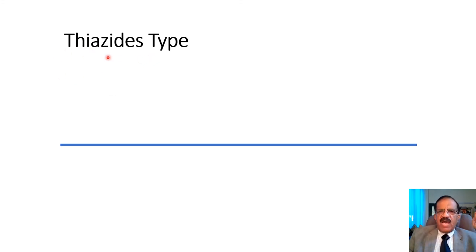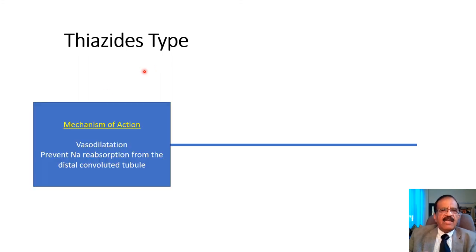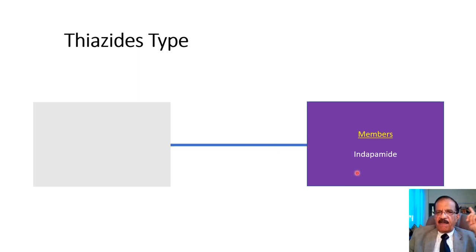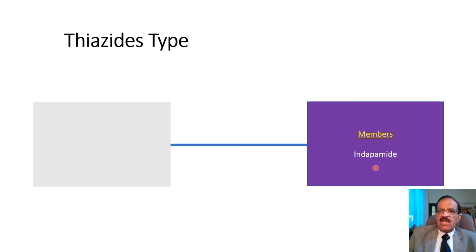Then we have drugs belonging to the same family but slightly different — that is why we call them thiazide-type diuretics. They are called diuretics but their diuretic effect is actually minimal; their predominant action is through vasodilation. Vasodilation helps lower blood pressure, and they also have some effect similar to thiazide diuretics — a combined effect of vasodilation and natriuresis. The only member of this class is indapamide. Most guidelines recognize indapamide as a better thiazide drug and recommend using indapamide whenever thiazides are needed.